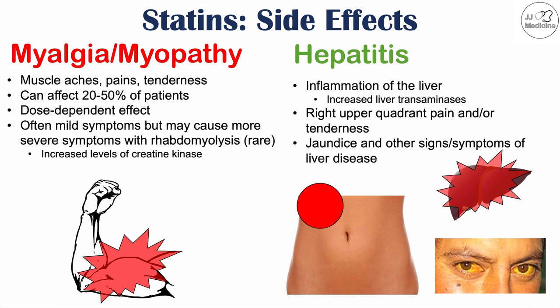In severe cases, hepatitis can lead to significant liver damage and jaundice — yellowing of the skin and whites of the eyes. Yellowing of the whites of the eyes is known as scleral icterus. This is a rare side effect of statin use, although it can occur. Myalgia and myopathy are very common, while hepatitis is less frequent.